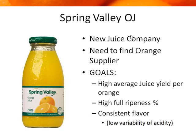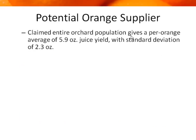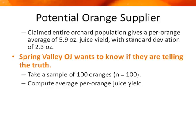So how do they make sure that the supplier can provide what they need? Well, this potential orange supplier claims that their entire orchard population gives a per-orange average of 5.9 ounces juice yield, with a standard deviation of 2.3 ounces. They've made a statement about the population.